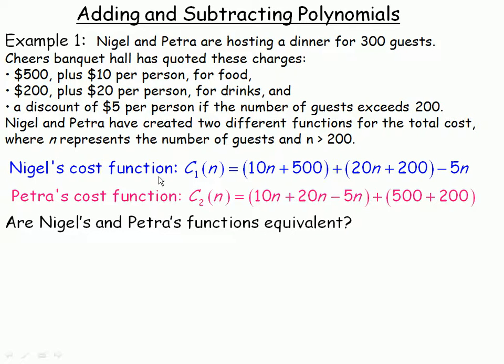Now Nigel's cost function, he's grouped, first of all, the $500 plus $10 per person.